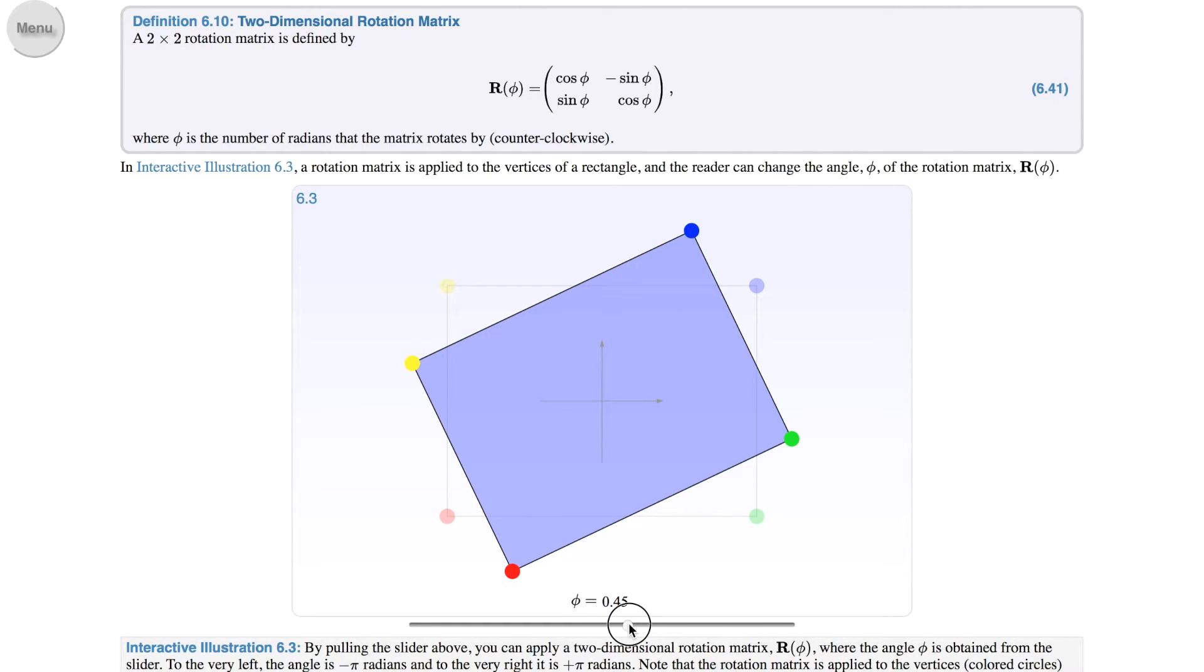And you can move all the way to plus pi here which is 180 degrees and you could also go all the way to minus pi and that's minus 180 degrees. So a full revolution here.